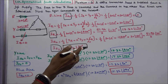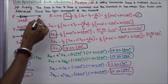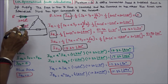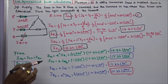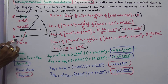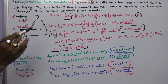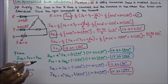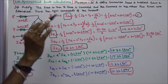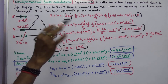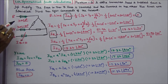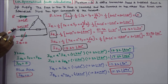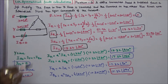The second problem is: a delta-connected load is supplied from a three-phase supply. The fuse in the B line is removed and the currents in the other phases are specified. Find the symmetrical components of the current. Here IR is equal to 30 angle 0, and IY is equal to 30 angle 180 degrees.